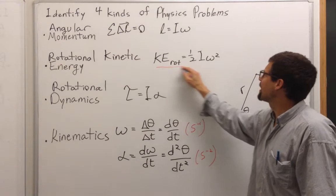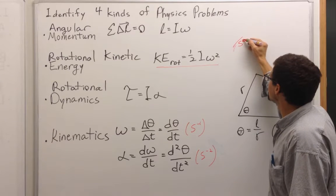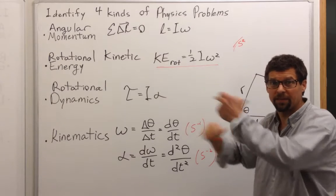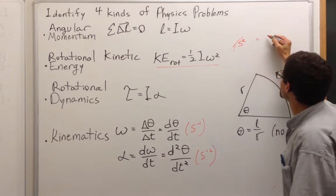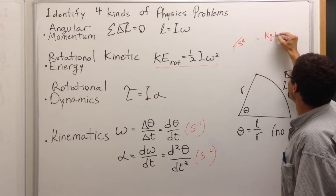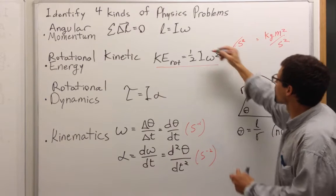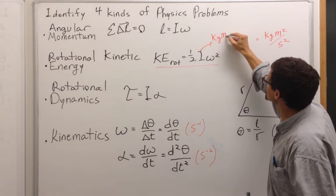And then we go to kinetic energy. We know that this gives us seconds squared in the denominator. And we better have joules because it's still kinetic energy even if it's rotational kinetic energy. So we need this to be equal to a joule, which is a kilogram meter squared per second squared. And so this right here must be kilogram meter squared.